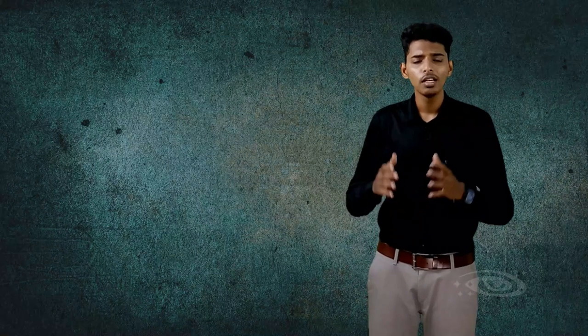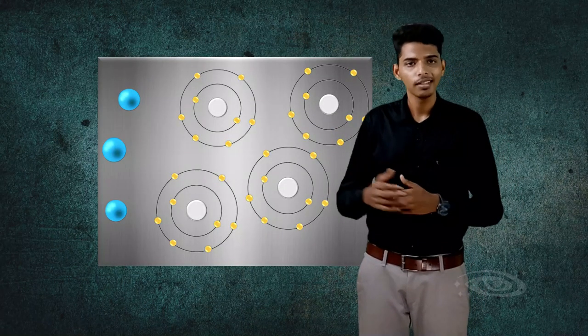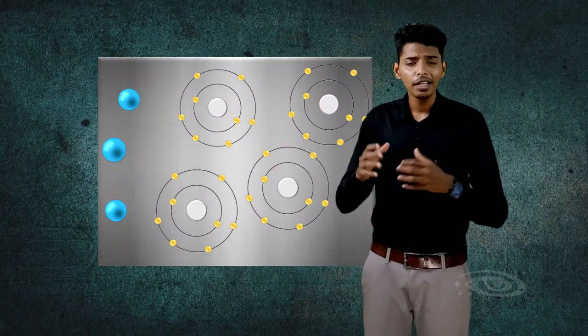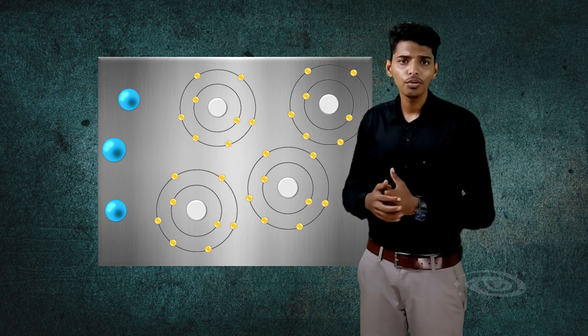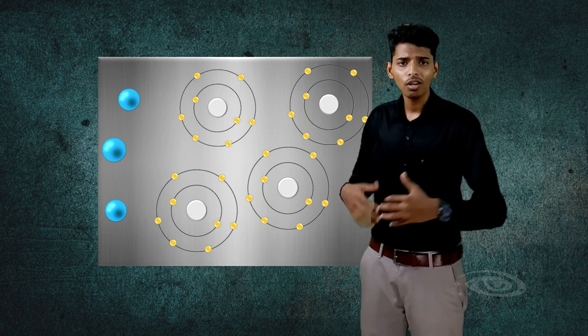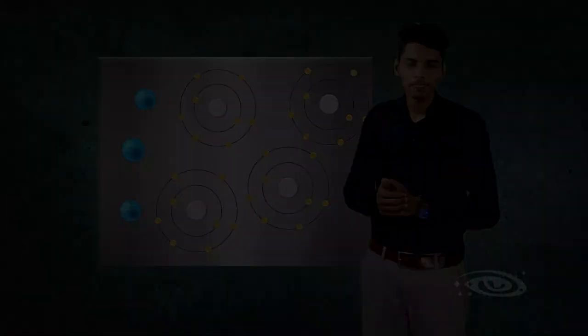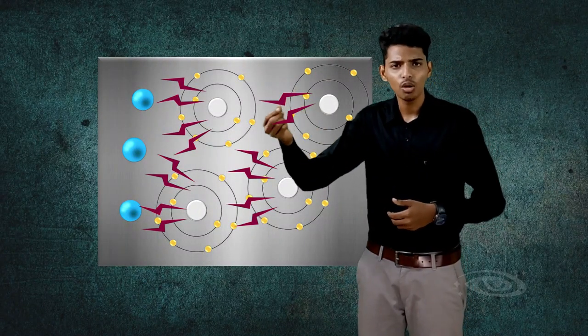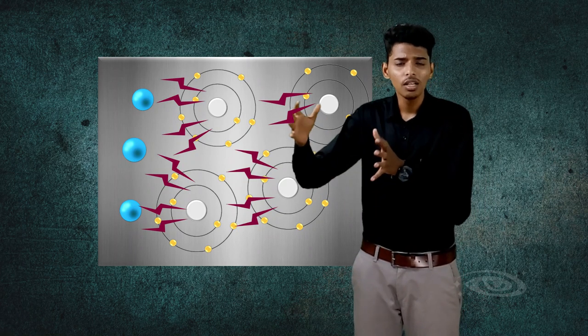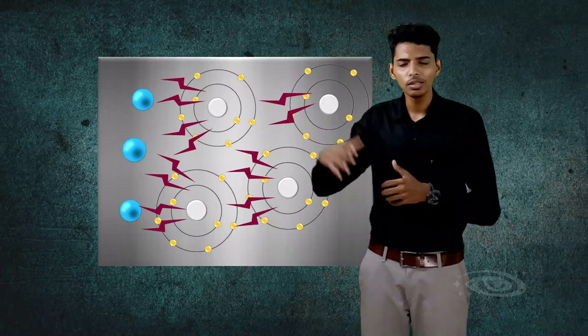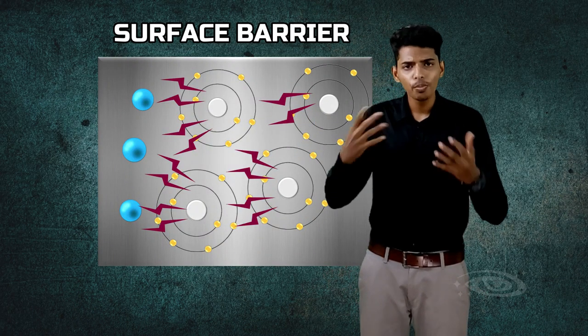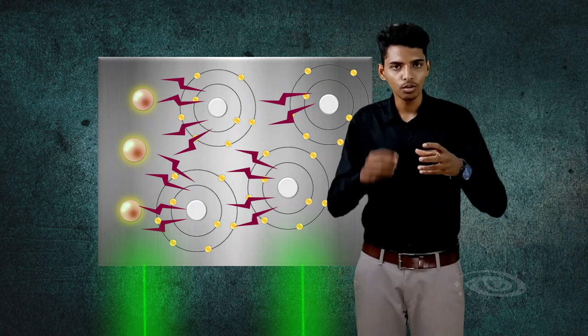You may have a doubt: these electrons are free to move inside the metal, but why do they need extra energy to move out from the surface? The reason is that when free electrons move to the surface boundary of the metal, they cannot jump out because behind them there are thousands of positive nuclei — that is, protons — which attract the free electrons from all sides. This attractive force is called the potential barrier, or surface barrier.